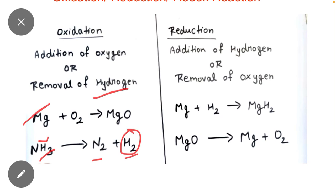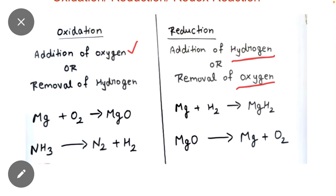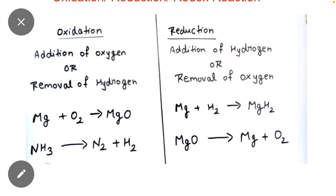Reduction is just the opposite of oxidation. In reduction: (1) hydrogen is added, and (2) oxygen is removed. For example, magnesium reacts with hydrogen to give MgH₂ — hydrogen is added, so this is reduction. Similarly, magnesium oxide is converted into magnesium and oxygen — oxygen is removed from MgO, so this is also called reduction.